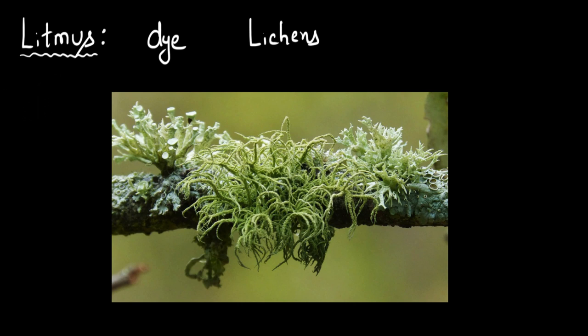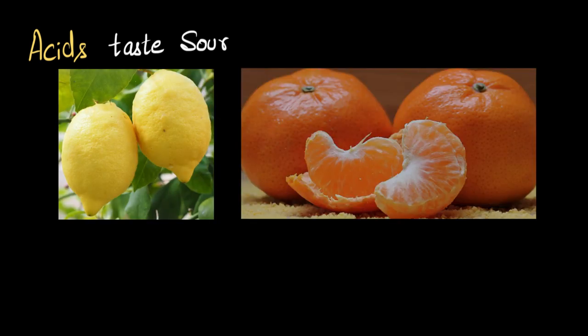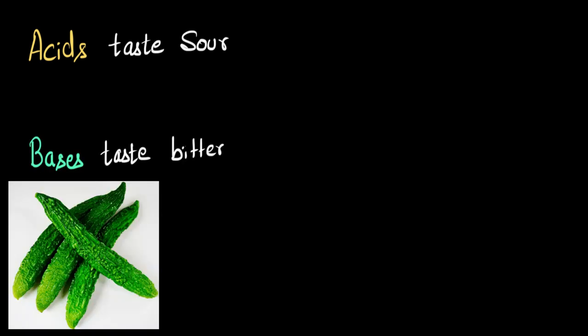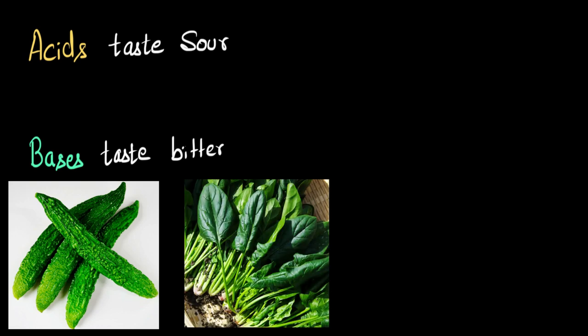You might be wondering why you need this. So far we know that acids taste sour — for example, lemons or oranges both have acids and taste sour — whereas bases taste bitter, like bitter gourd, spinach, or any green leafy vegetable. But we can't go around tasting each and every solution to identify acids and bases, because some acids and bases could be poisonous or harmful. So we cannot rely on taste, and that's why we use indicators.